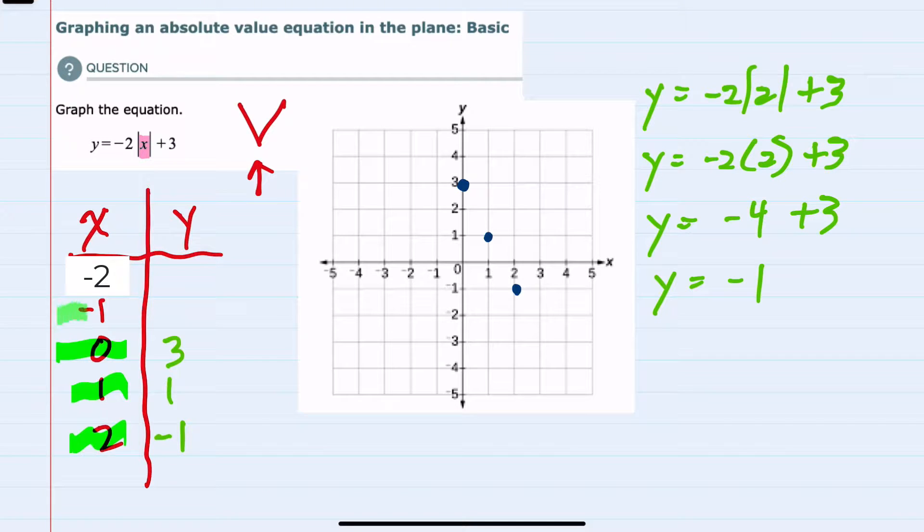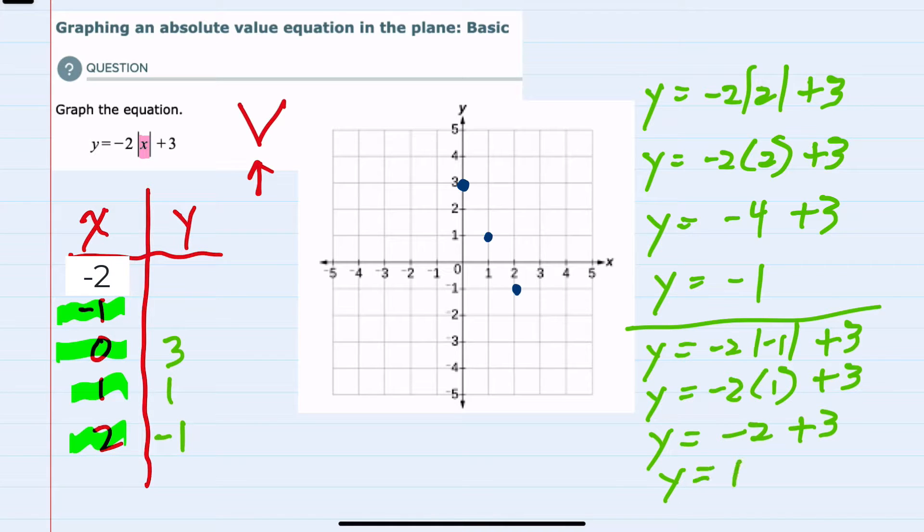We'll next move to substituting in these negative values of x, starting with negative 1. Substituting for x, we have y equals negative 2 times the absolute value of negative 1 plus 3. When we evaluate the absolute value, since the absolute value turns a negative number into a positive one, this would be negative 2 times positive 1 plus 3. Doing the multiplication first, this would be negative 2 plus 3, or y equals 1. So our next coordinate is (-1, 1) located here.